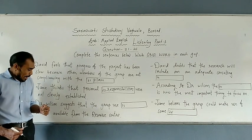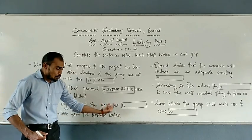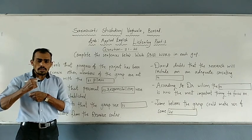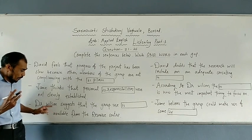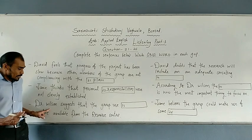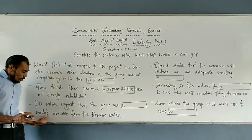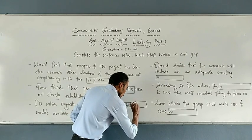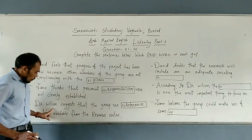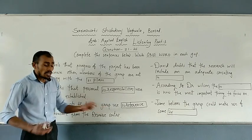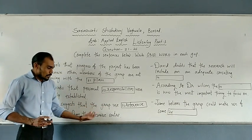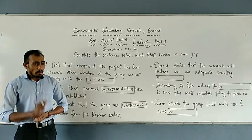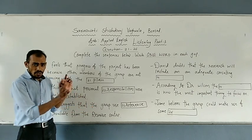For question number 23, Dr. Wilson suggests that the group use a dash module available from the resource centre. The answer is 'reference'. Dr. Wilson suggests that the group use a reference module available from the resource centre. If they could use the reference centre, it would be really helpful for their history assignment. Students, check your answers after completing this class.